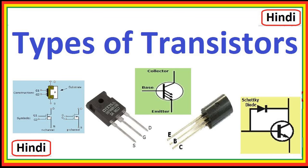BJTs operate based on the principles of semiconductor physics, specifically the movement of charge carriers — electrons and holes — across the transistor's layers. The transistor can be in one of two main modes: the active mode, for amplification, or the cutoff/saturation mode, for switching. In the active mode, a small input current at the base controls a much larger output current flowing from the collector to the emitter. This property makes BJTs suitable for amplification purposes. The ratio of the output current to the input current is known as the current gain, beta.